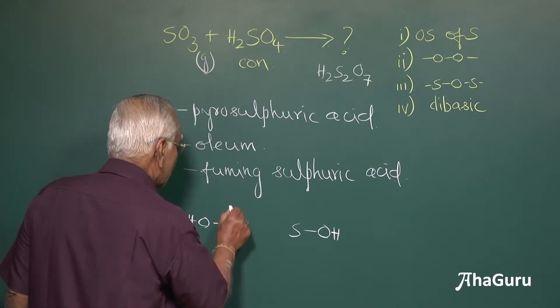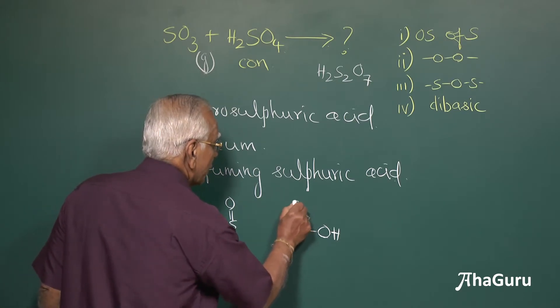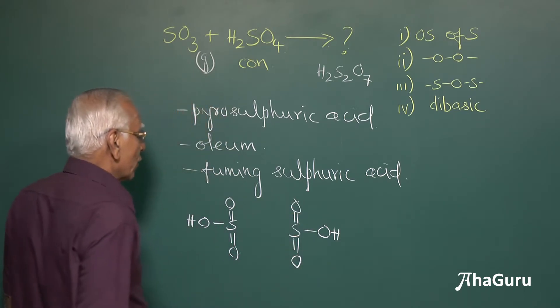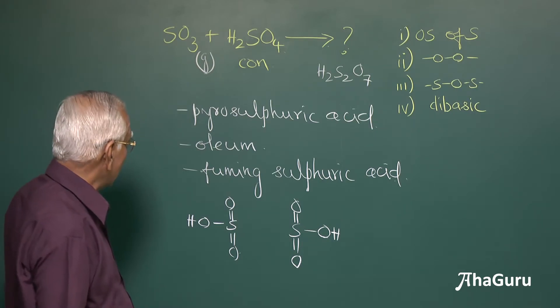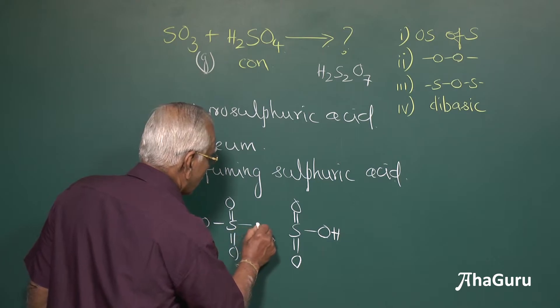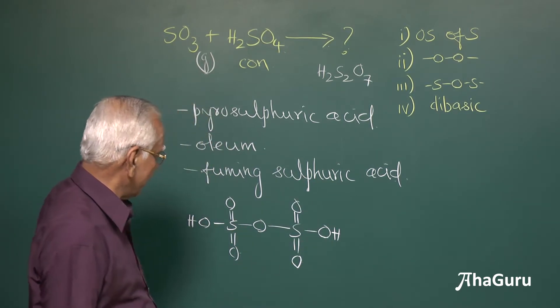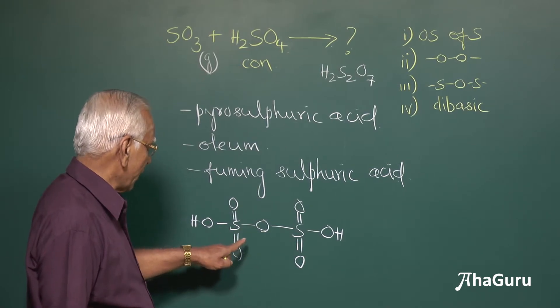And each sulfur atom is connected to the oxygen atom like your sulfuric acid. So we have already accounted for 6 oxygen atoms and 2 hydrogen atoms and 2 sulfur. We have to account for 1 more oxygen atom and this is there between sulfur, 2 sulfur atoms. Therefore,